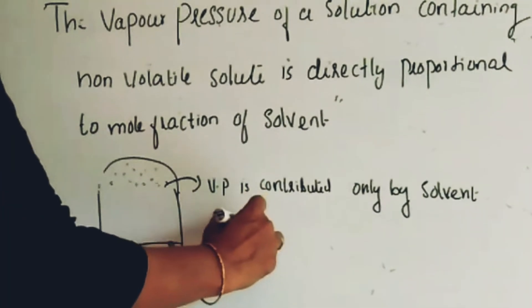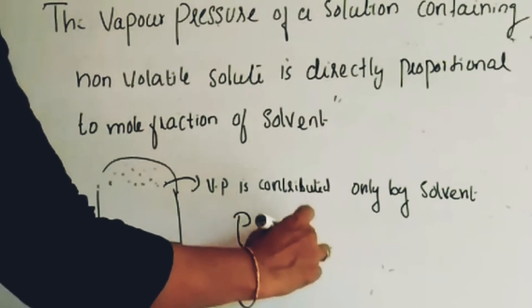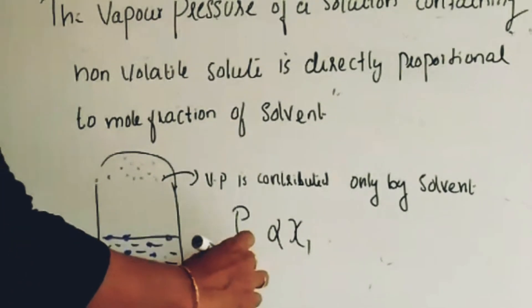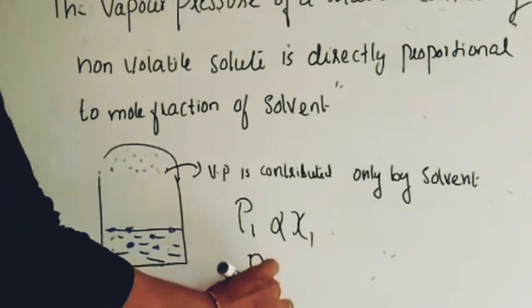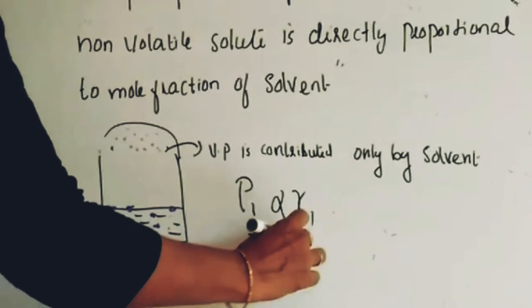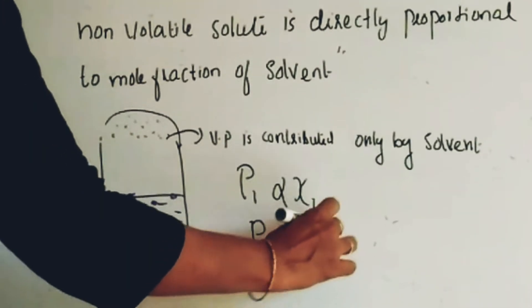See P1 proportional to X1 because X2 is not contributing anything. So P1 is equal to P1°X1.